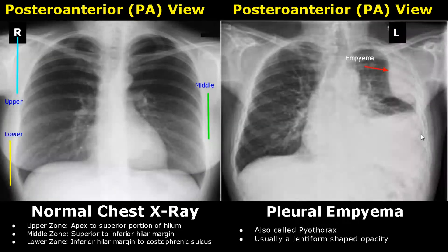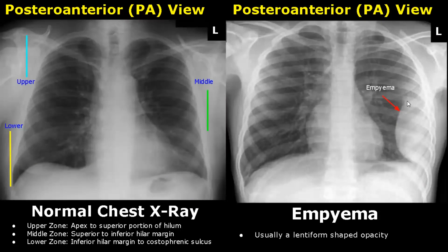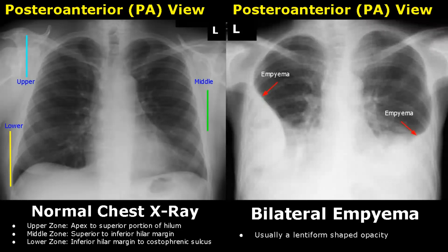An empyema is defined as accumulation of pus within the pleural cavity. The opacity usually has a lentiform shape, which is a bi-convex shaped opacity. This is an image of an empyema in the left middle and lower zones — the opacity has a specific lentiform shape. We can see bilateral empyema in this image, with two lentiform shaped opacities, one in each lung.